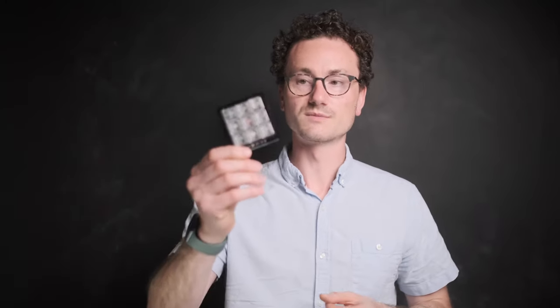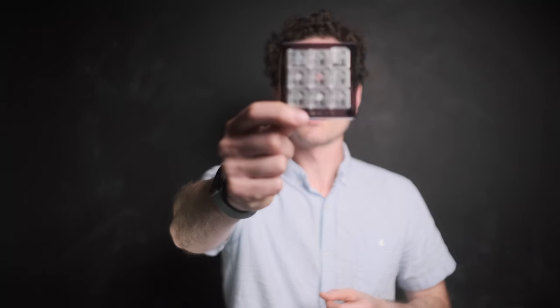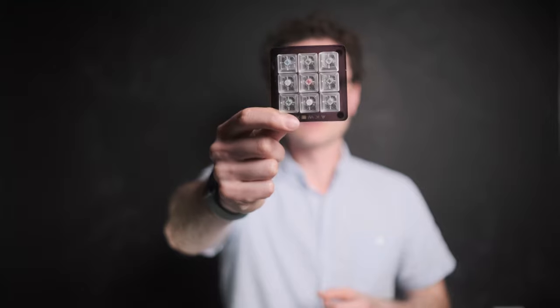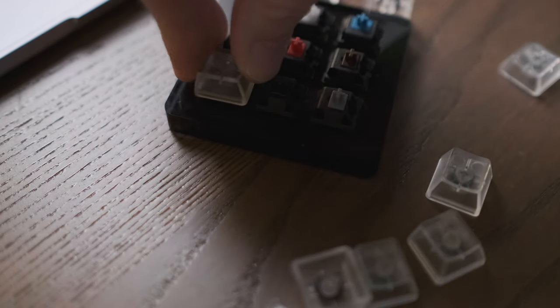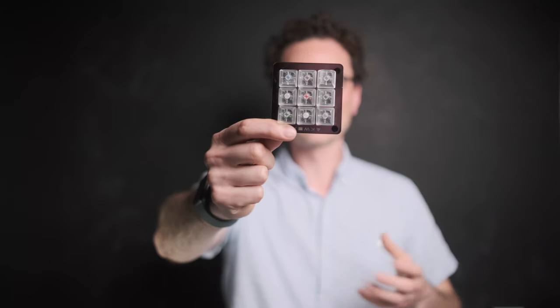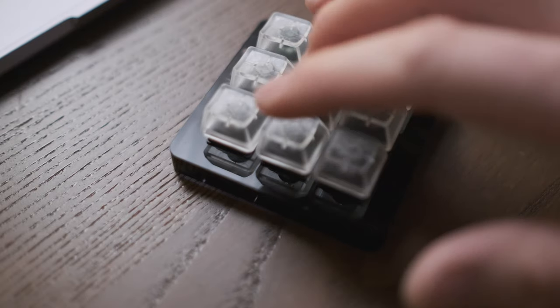When you're in the early stages of mechanical keyboard research, you want to get hold of one of these. This is a little switch tester. You can pick these up off Amazon and they include all the main different switches. You can just about see the different colored switches under these clear keycaps. Each one's got a different feel and a different sound.